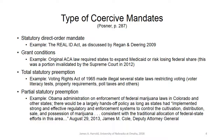The Posner reading draws greatly from a journal article he wrote and talks about types of coercive mandates. I'm going to give the list he shows on page 287 of the text and provide an example for each one.